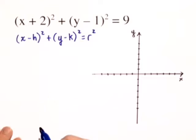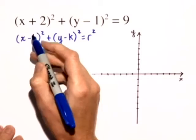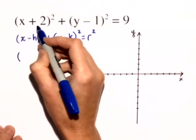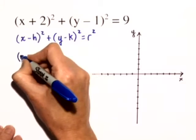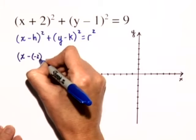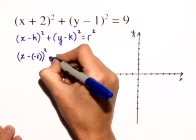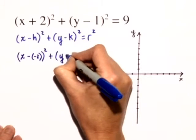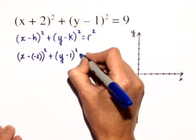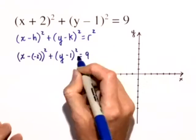So I'm going to rewrite this original equation just slightly. I'm going to write it instead of x plus 2, I'm going to write it as x minus negative 2 quantity squared plus y minus 1 quantity squared is equal to 9.